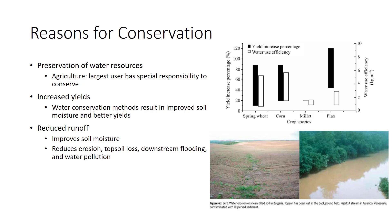Water conservation methods result in improved soil moisture and better yields. Semi-arid areas respond especially well to conservation efforts. For example, about 4 inches of water is needed to mature a wheat crop, and USDA research indicates that each additional inch of available moisture stored in the soil can raise production from 2.5 to 6 bushels per acre. Some strategies for conserving water involve reducing runoff from farm fields. Methods for reducing runoff also reduce erosion and topsoil loss, downstream flooding, and water pollution from soil particles, fertilizers, pesticides, and human pathogens carried off farm fields by runoff.